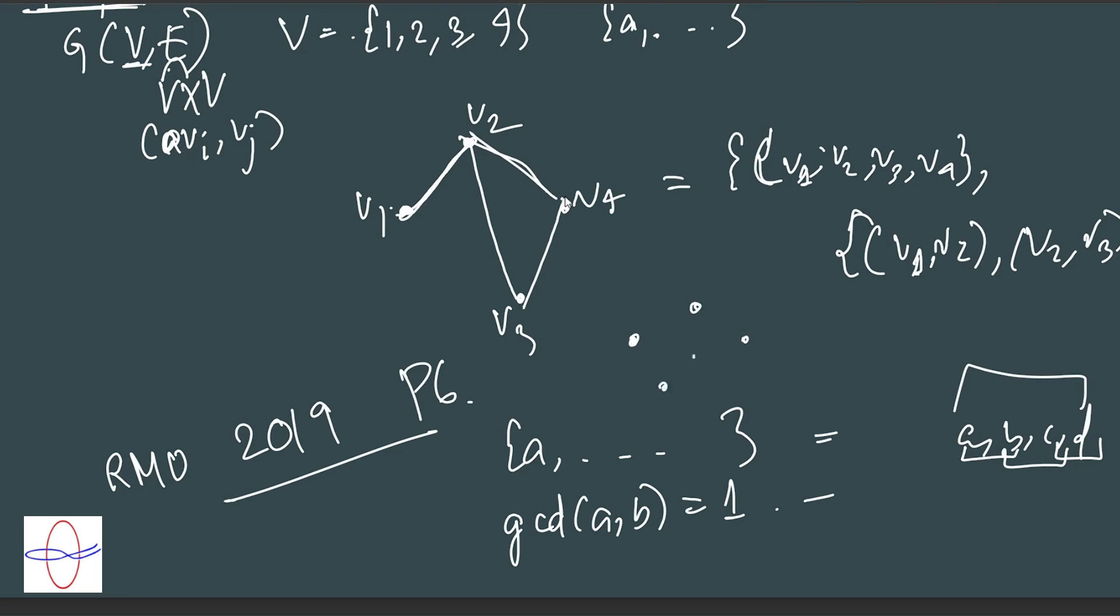Do you see how we could represent this as a graph? We could represent these points as vertices, these elements as vertices, and the quality of being coprime can be represented as an edge. It's a very ubiquitous setup.